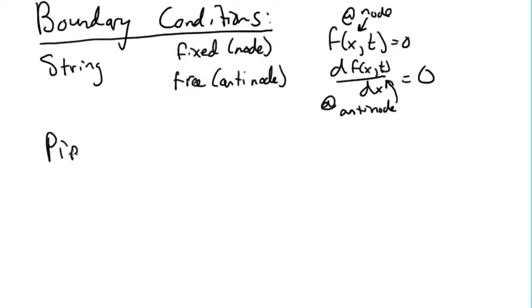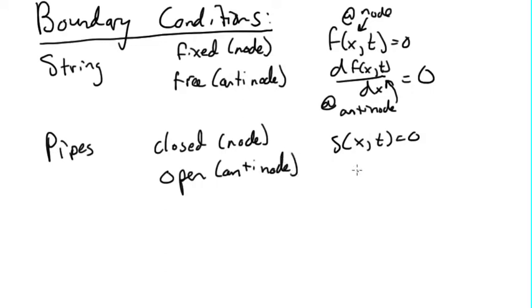Likewise for pipes, we can have a closed end, which is a node. I'm going to use the description of the displacement of an air molecule for my amplitude rather than pressure. So closed is a node, so that's going to be s of x comma t equal to zero at the node. And then for an open, it's going to be an anti-node, so ds of x comma t over dx equal to zero.